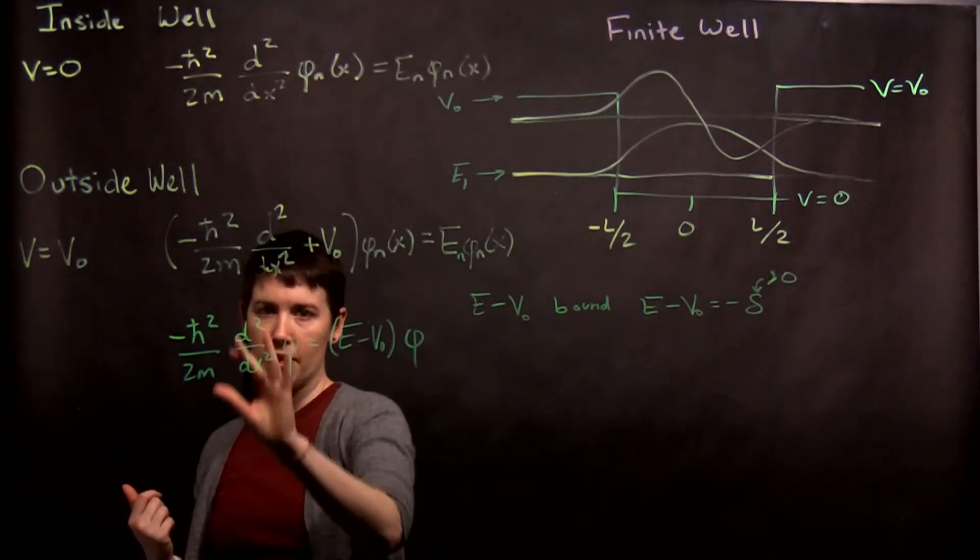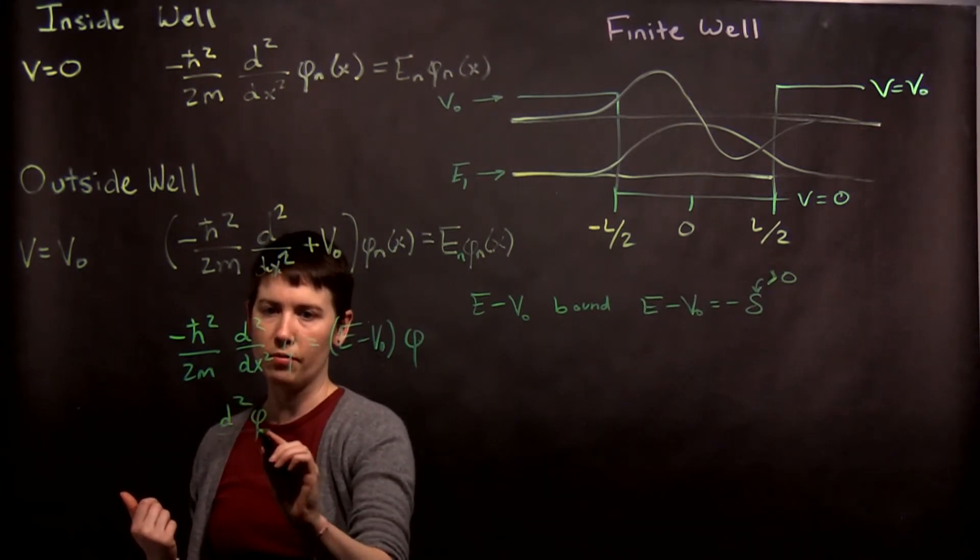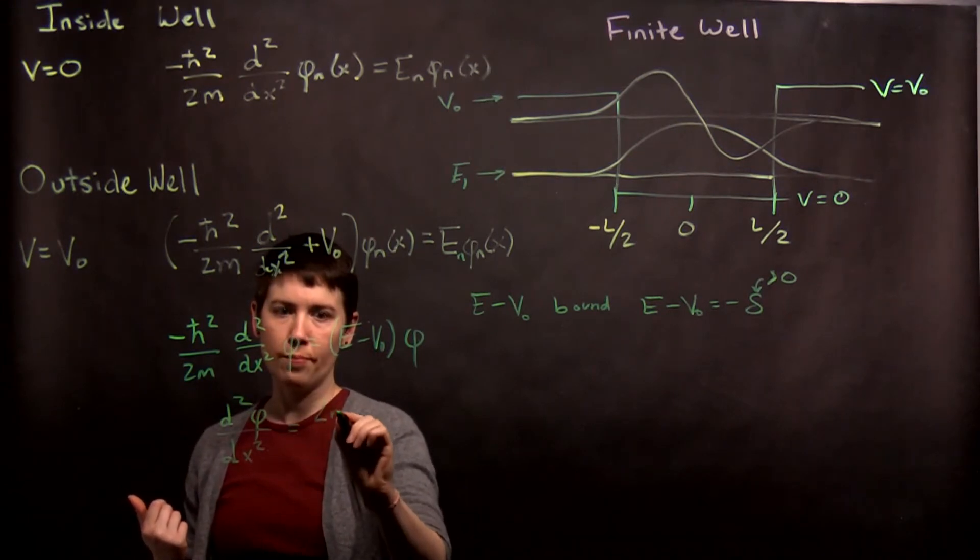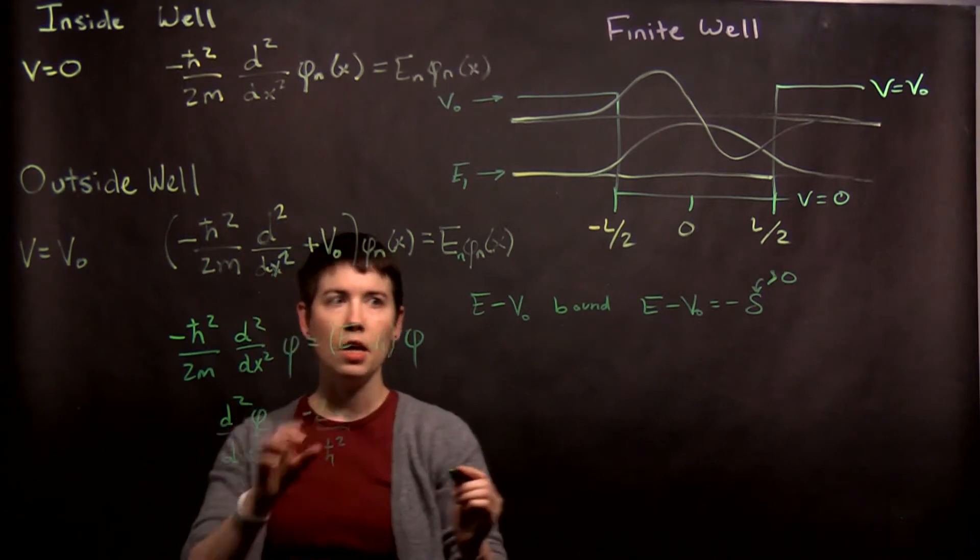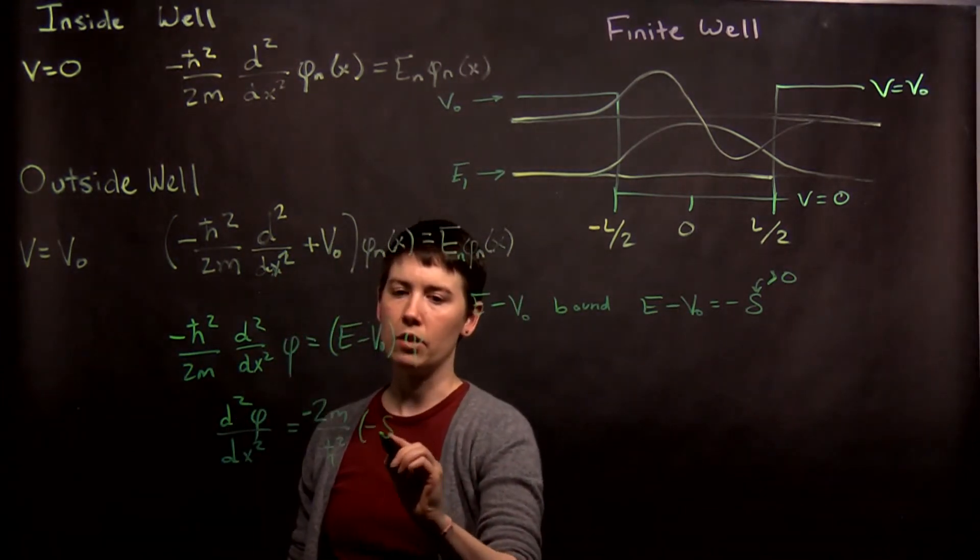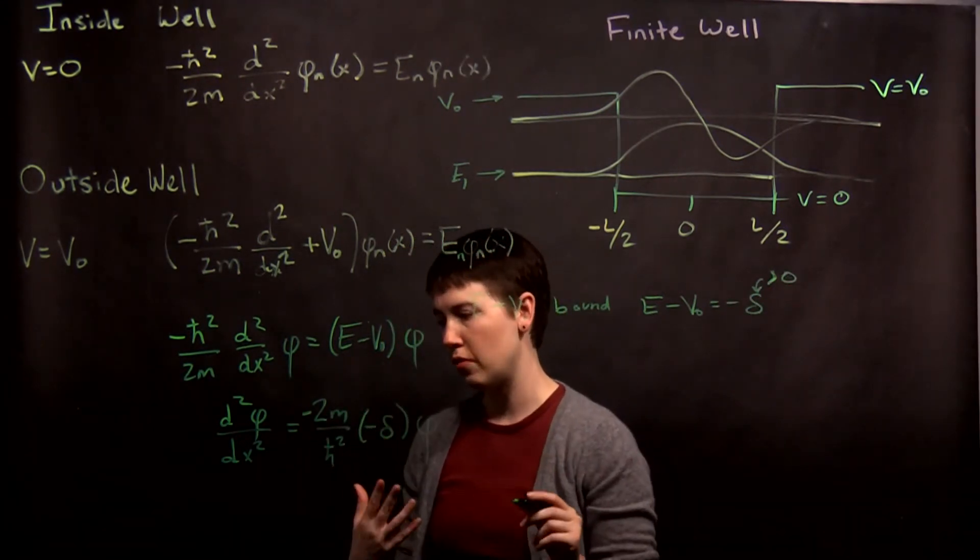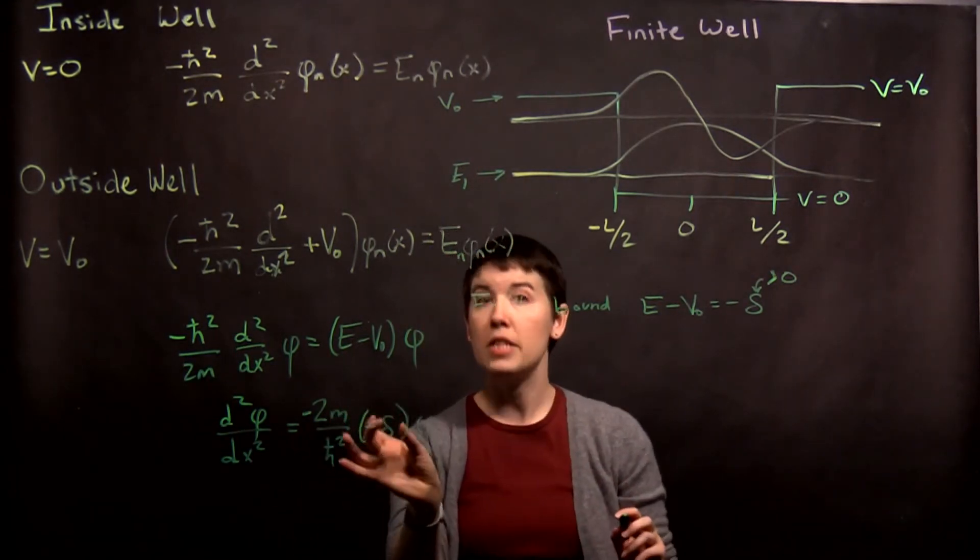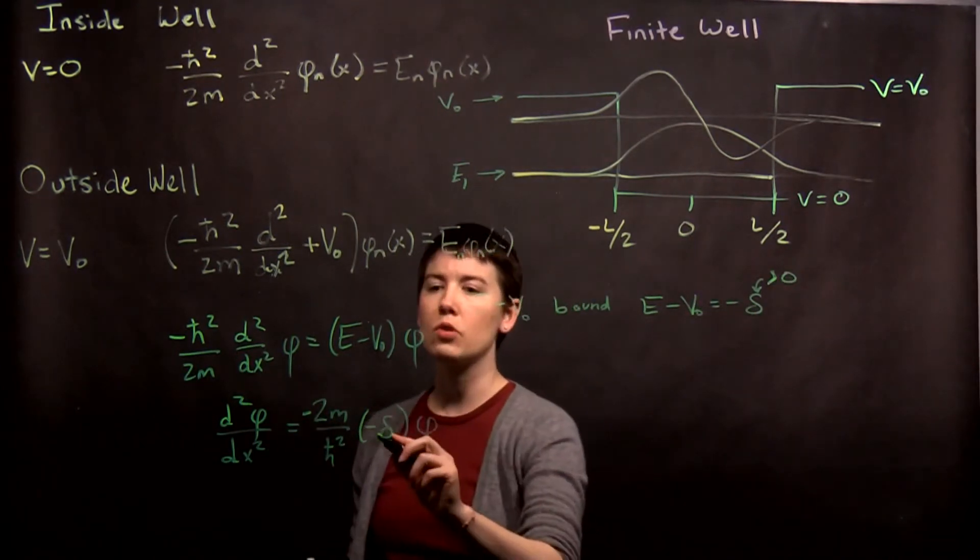So when I have this, I can rearrange as my second derivative of my wave function with respect to position is equal now to 2m over h-bar squared, with a minus sign, and I said that E minus V naught is going to become negative delta phi. So the reason I explicitly did this substitution right now is that you're able to see that, in fact I have a negative number here. Negative times a positive number, and a negative there. So those cancel.